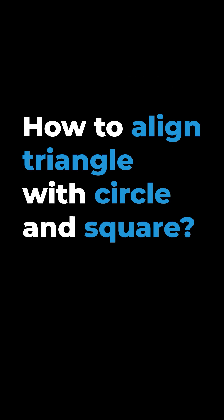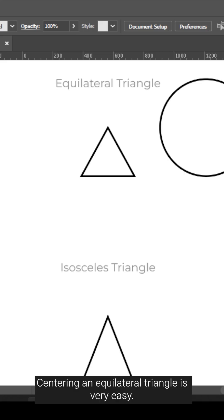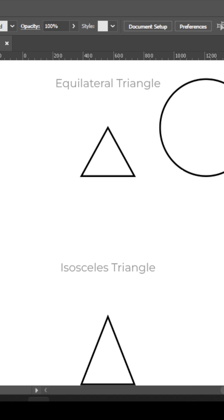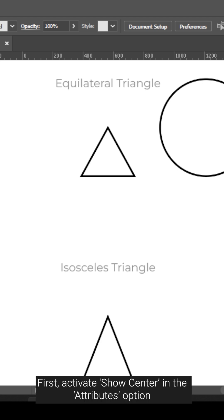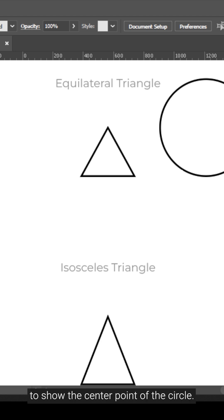How to align a triangle with a circle and a square. Centering an equilateral triangle is very easy. First, activate 'Show Center' in the attributes option to show the center point of the circle.